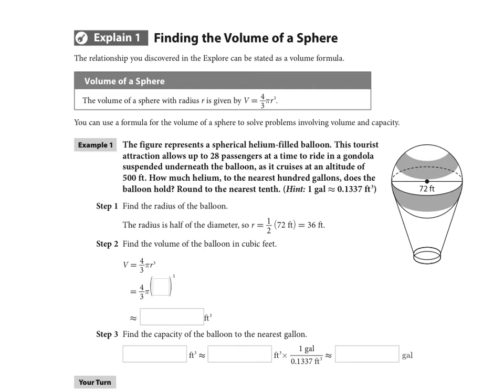The other thing that's important to know in these word problems is sometimes it's good to filter out all the information that you don't need and be an active reader. So 28 passengers at a time is important information to have, but not as we're calculating the volume—only if we're trying to figure out whether it's going to lift off or not.